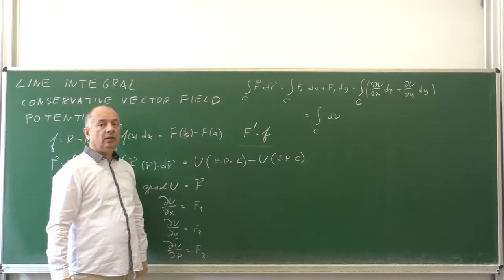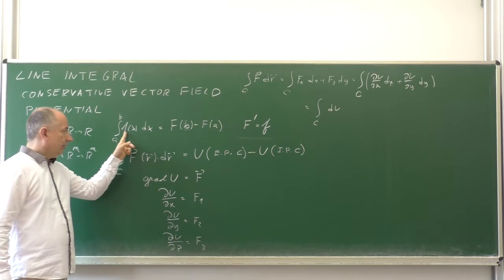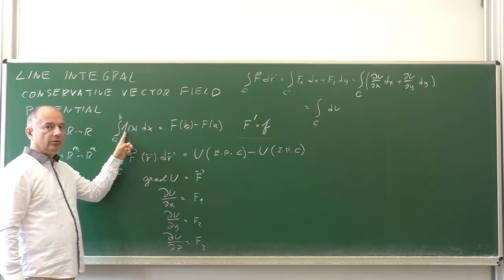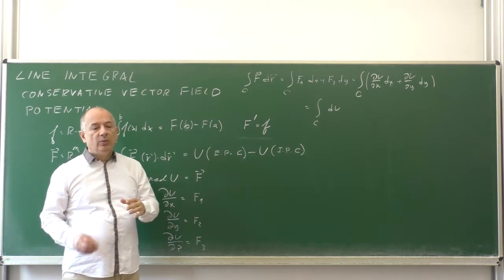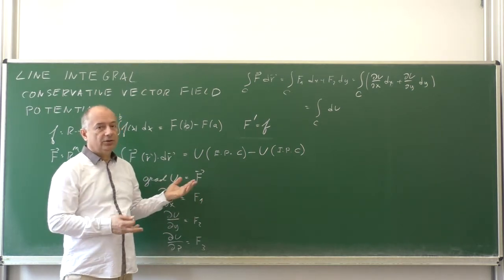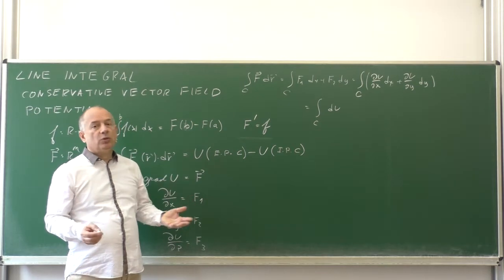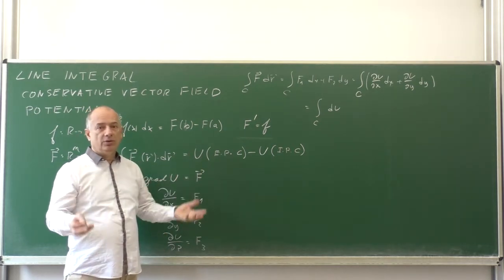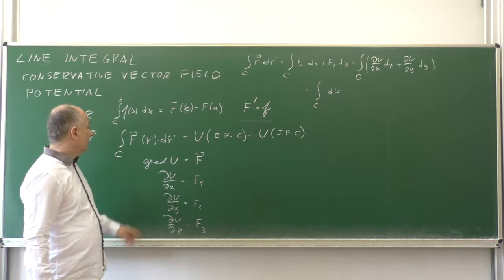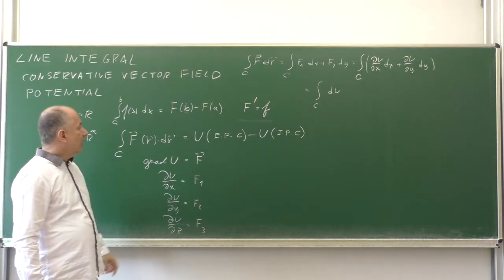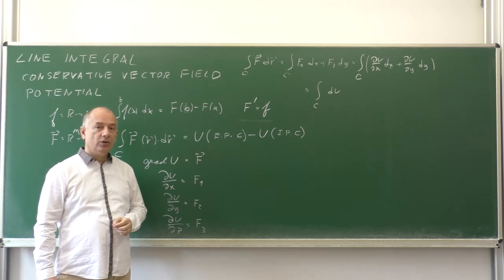This is a direct generalization of the one-dimensional formula. In one dimension, if the integrand is continuous, the antiderivative always exists — though sometimes we cannot write it in closed form, it still exists. In higher dimensions, however, this is not always the case. Some vector fields are conservative and have a potential, and some are not and have no potential.